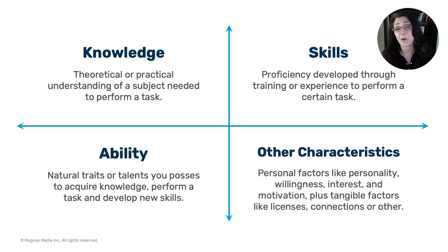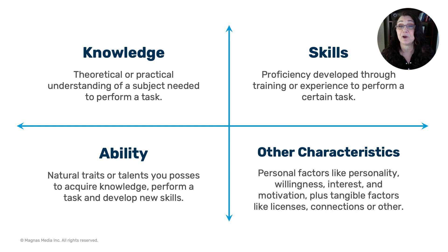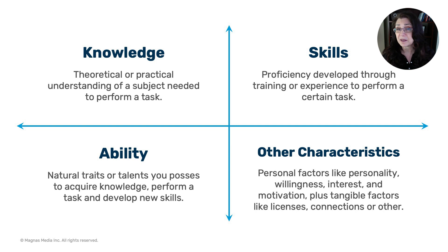Try to identify what skills are needed to see who on your team has them, who can develop them, or if you need to bring someone from outside to fill in those skills. Next, you have ability — something that's a natural trait, a talent you possess or acquire, but there's usually a barrier to entry because it's more natural. For example, if somebody is four feet tall, it's very hard to apply to a basketball team where everyone is six or seven feet tall.